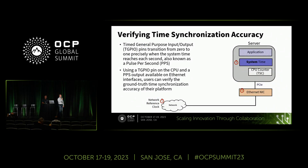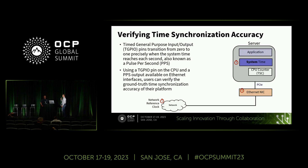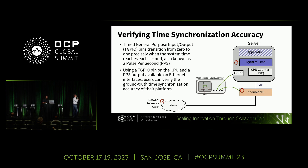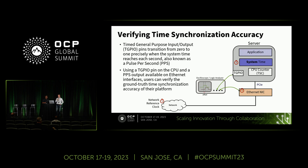Now that you have PTM and your system up and running, how do you ensure that your time is accurate? How do you know the ground truth of what is actually occurring? That's what we use TGPIO for. Using TGPIO, we're able to have a pulse per second output from the server itself based on the system clock, as well as a pulse per second from the actual NIC, and we can compare those using an oscilloscope or logic analyzer. This allows us to ensure our time is synchronized to within tens of nanoseconds of accuracy to our reference clock.